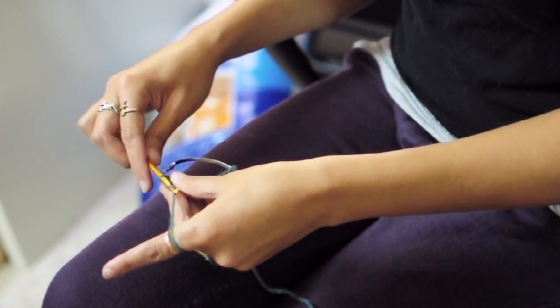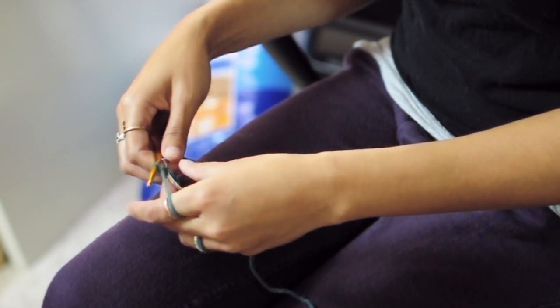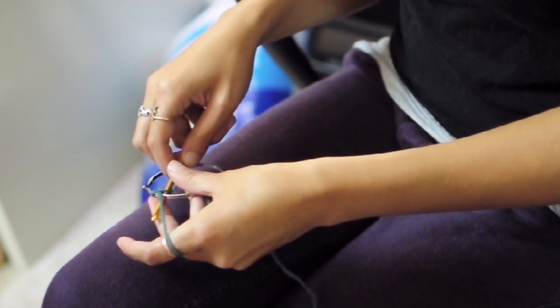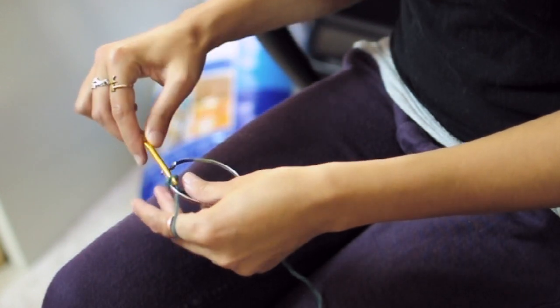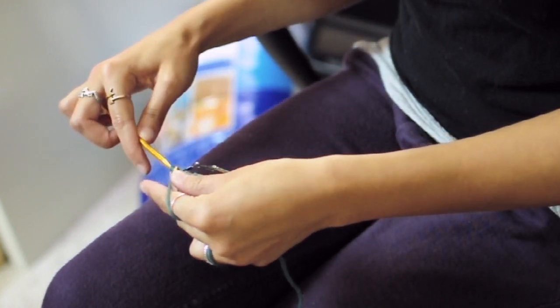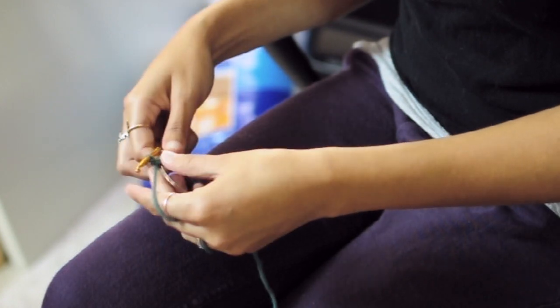So that's pulling up a loop, and then yarn over and pull through that loop. And then you're going to continue doing this, inserting the hook underneath, pulling up a loop, and then pulling it through both of those.